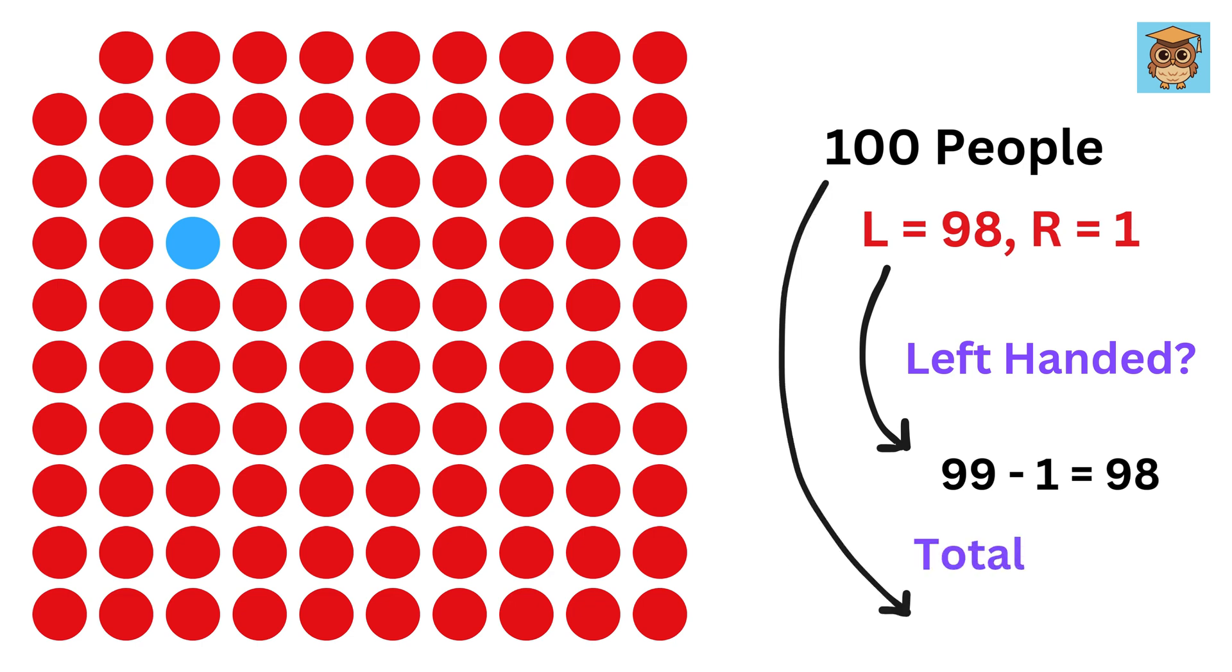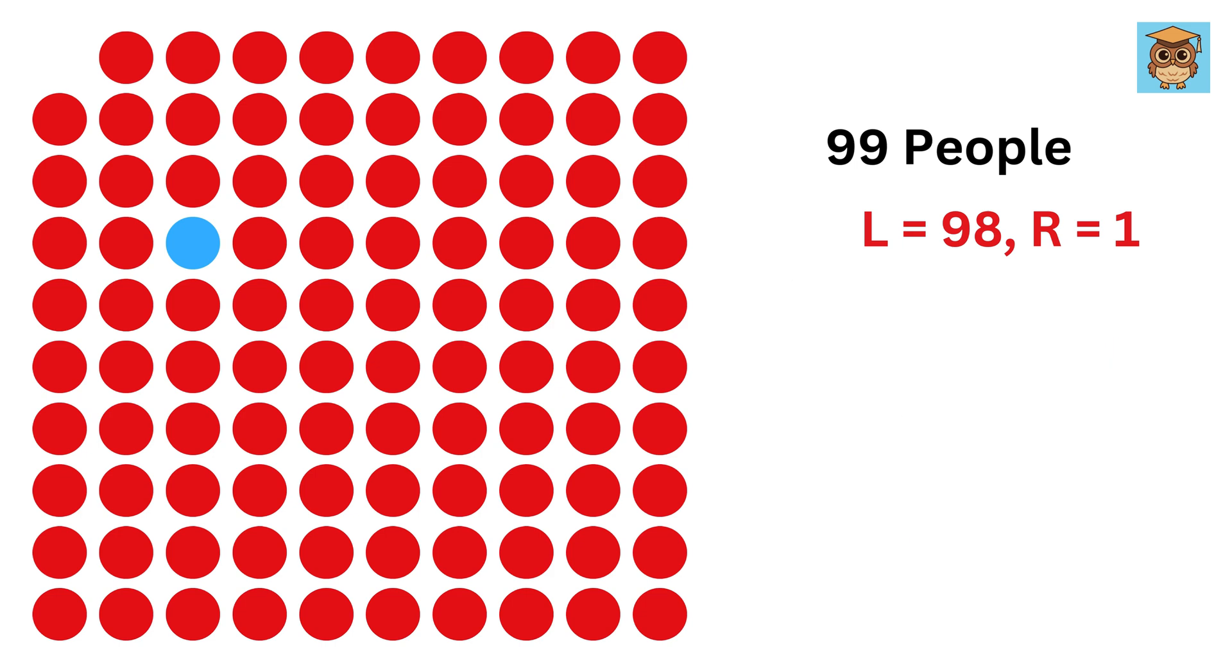But the thing is that the total number of people has also decreased by 1, and there are a total of 99 people only. So if we take percentage, we get 98 over 99 times 100, or 98.99,